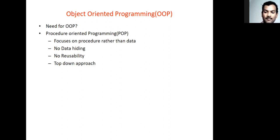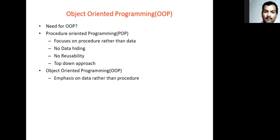To overcome those limitations, people are moving towards object oriented programming languages. The limitations present in the previous paradigm are overcome in object oriented programming. Here, more emphasis is given to the data. Nowadays the data is very important and we need to protect it. Such data security is not available in procedure oriented programming, but that facility is provided in object oriented programming languages. The data hiding facility, which is not present in POP, is provided in OOP with the concept called encapsulation.